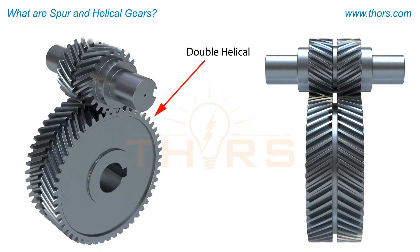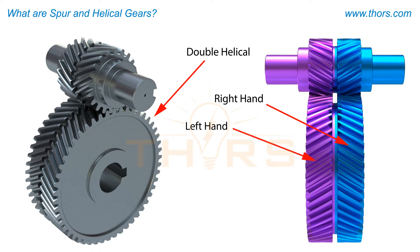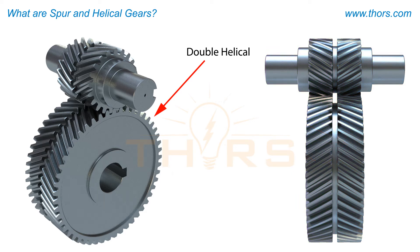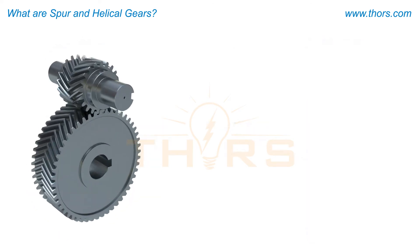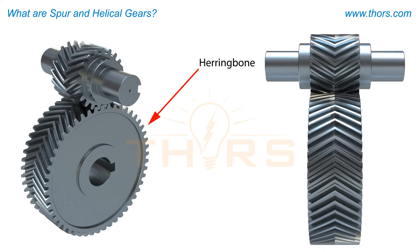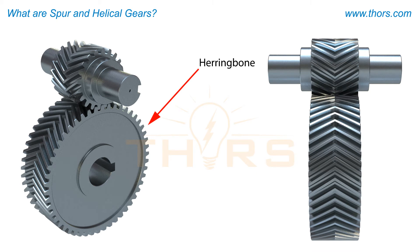Double helical gears, unlike single helical gears, have both right and left hand helical teeth. They have a space called the center groove or gap between the two helices to provide clearance for manufacturing tools. The herringbone gear is similar to a double helical gear but without the space between the helices, so the teeth meet in the middle at the apex.